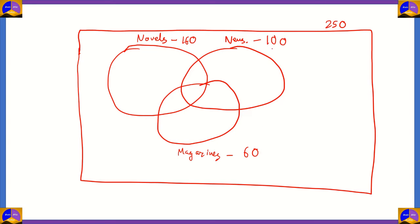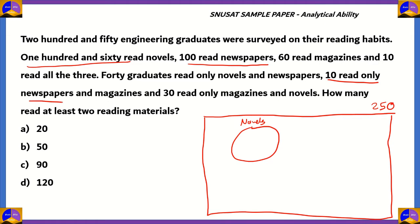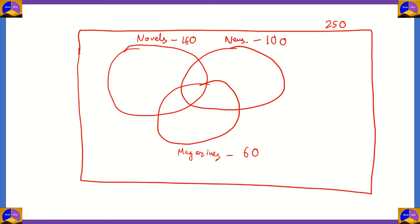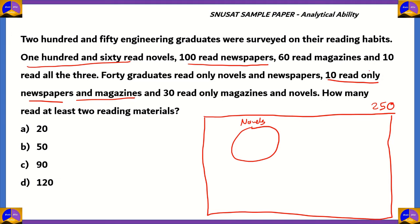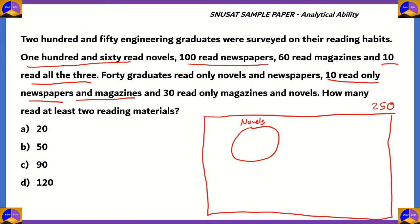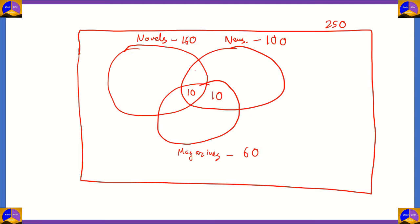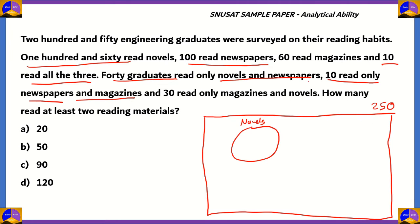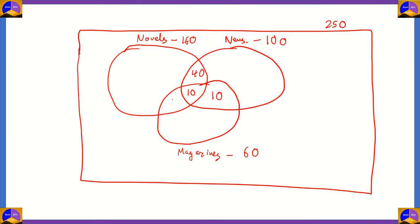That means 160 plus 100 is 260, and 260 plus 60 — basically, we do have a lot of people who read more than one reading material. 10 read only newspapers and magazines, so between the space that overlaps newspapers and magazines, we write the number 10. We also know that 10 graduates read all three materials, so the middle section which has all three sets overlapping must also have a 10. We also know that 40 graduates read only novels and newspapers, so this area is 40. Then 30 people read only magazines and novels, so this area is written as 30.